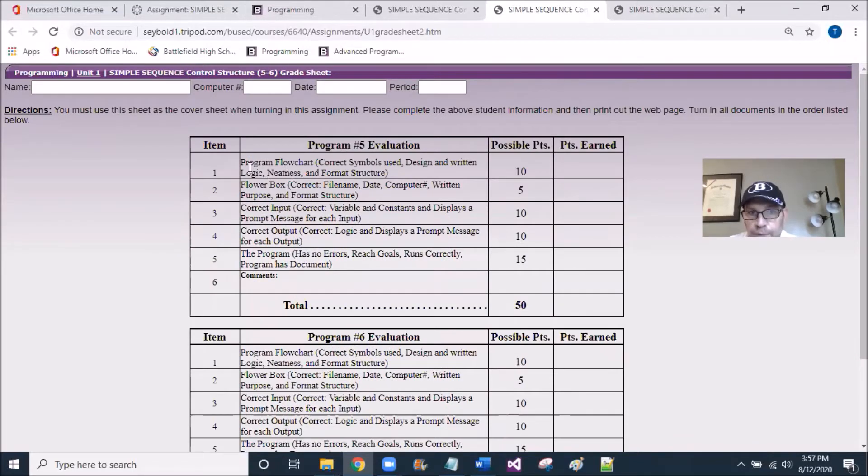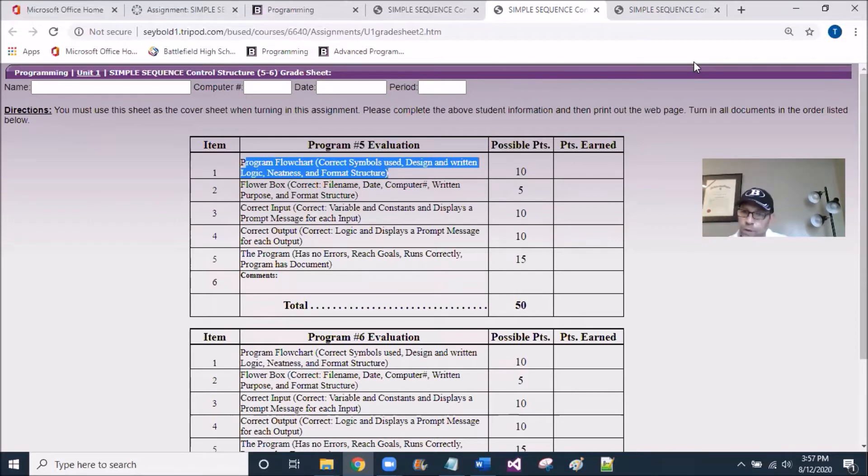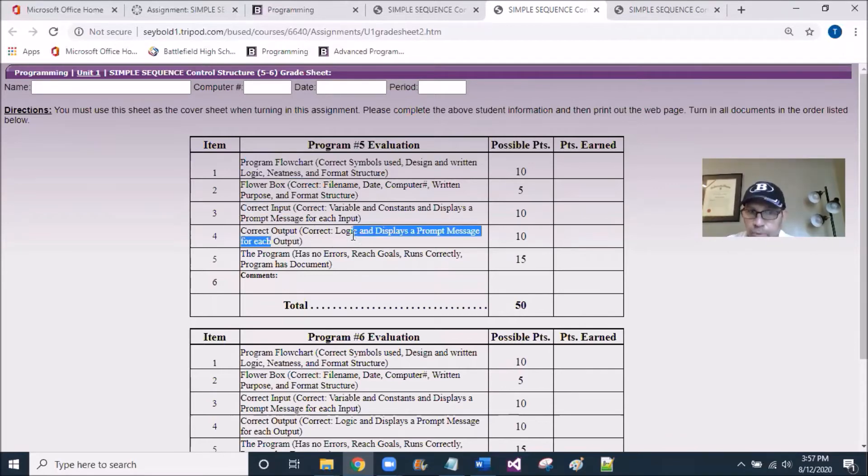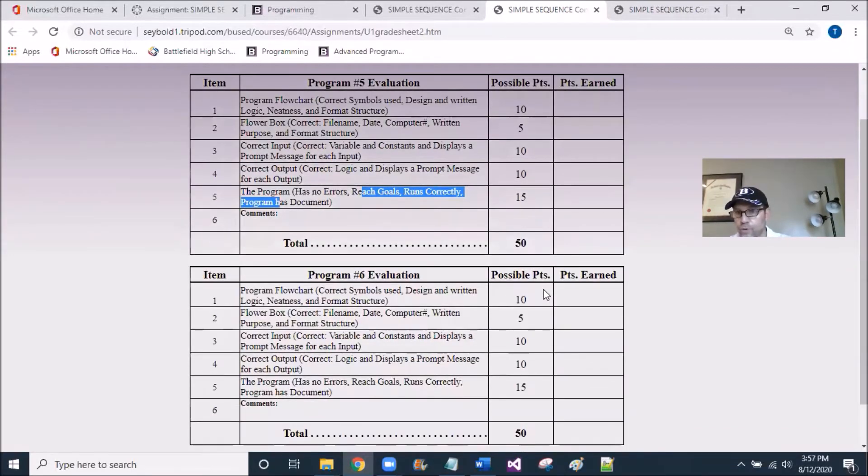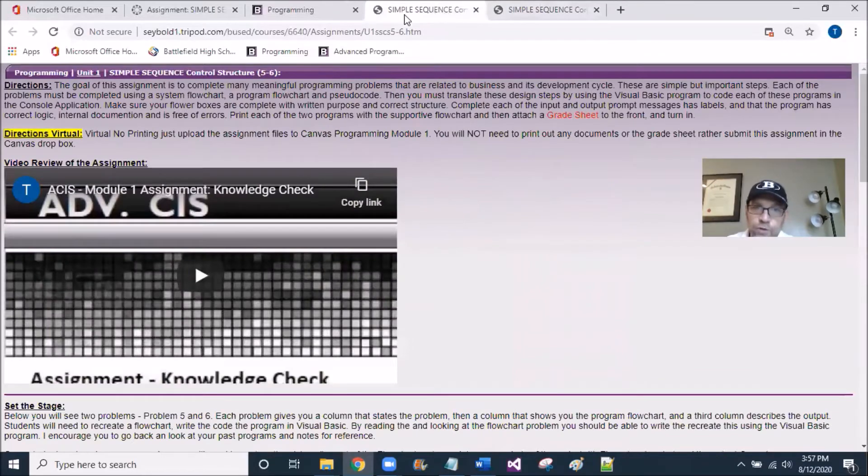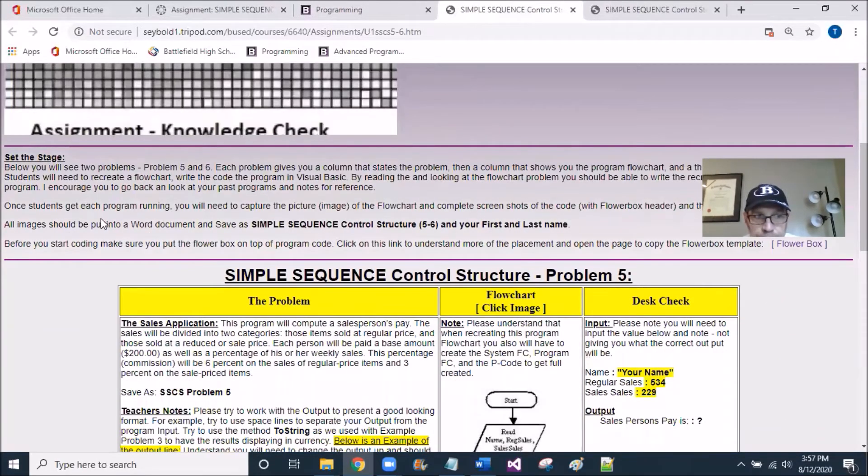Programming 5 is worth 50%, Programming 6 worth 50% with a total of 100 there. So as I look at this, the guidelines, creating the flow chart for Problem 5 where you're going to have the system flow chart, the program flow chart, and the studio code bound three together. That's 10 points. Flower Box 5 points, correct input, correct output displaying, and then the program runs. And you can see those values up to 50. So this is, for the most part, what I'm looking for. You'll have a Word document. You can have screenshots of the three things for five and the screenshots and the three things for six.